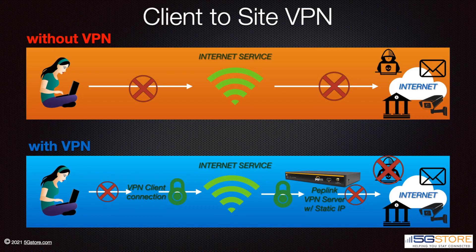Client-to-site VPN connections include L2TP with IPSec, PPTP, and OpenVPN. As an example, let's say we're at the local coffee shop connected to their free Wi-Fi with our laptop. If we want to do some online banking securely, we can connect to the Peplink router at our home using any of these VPN connections. However, it's important to note that this is only possible if the internet connection at your home has a publicly routable IP address, such as a static IP, meaning it can be accessed from an outside connection provided it has the correct information and credentials.